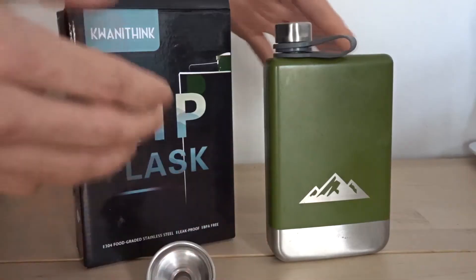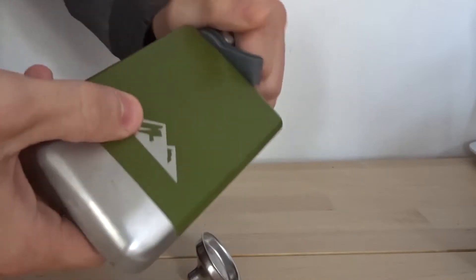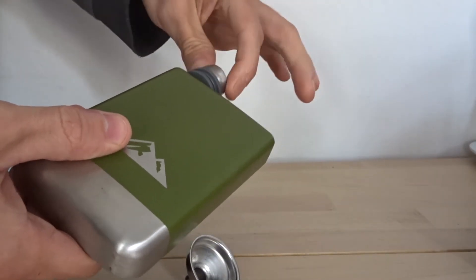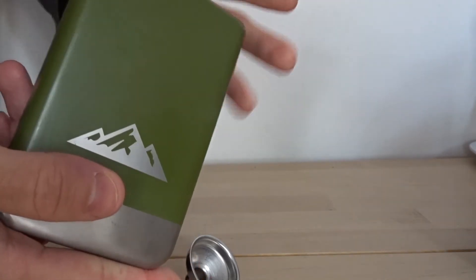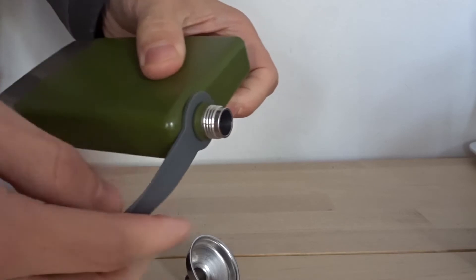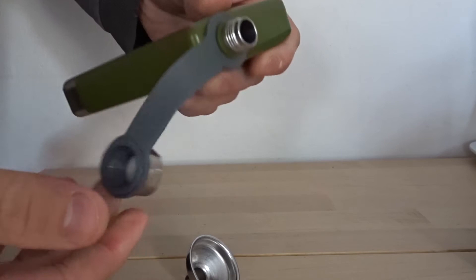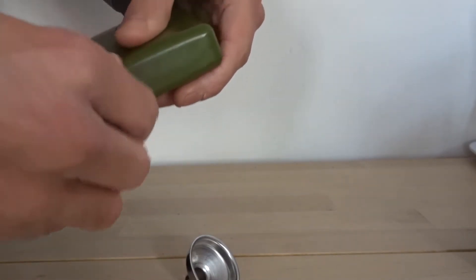What makes this hip flask really good is that it's been spill-proof. Now I've gone camping many times this year and this thing has been with me throughout, and it hasn't spilled one drop. It's got a very nice thread on it and a nice rubber gasket to keep everything sealed.